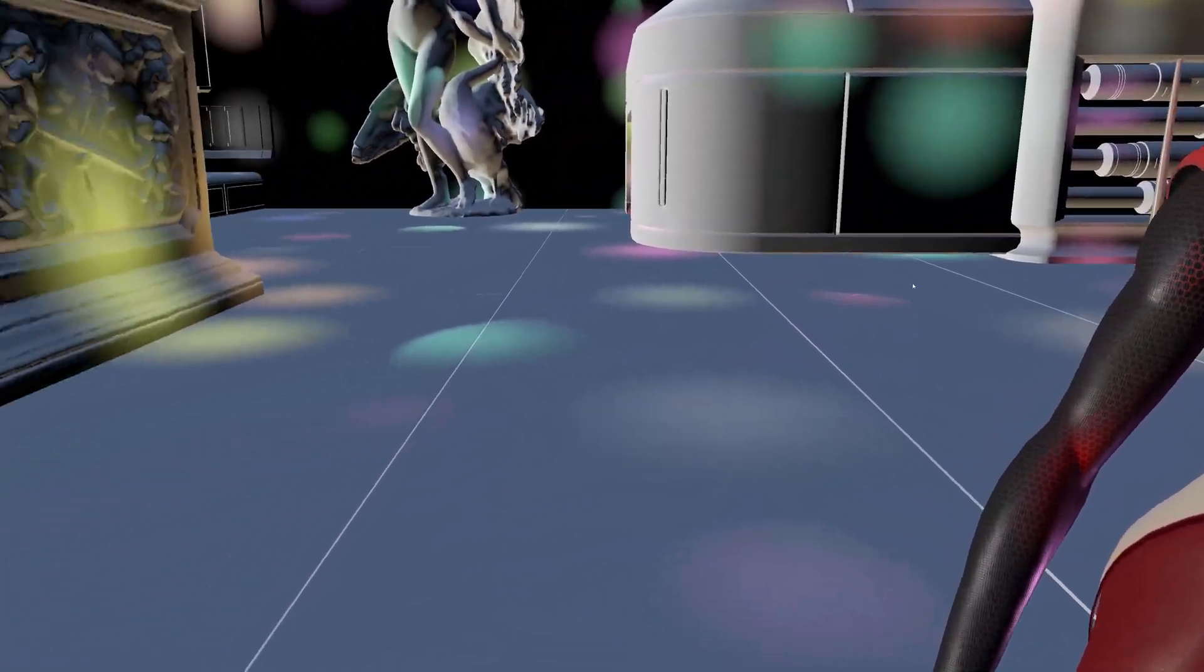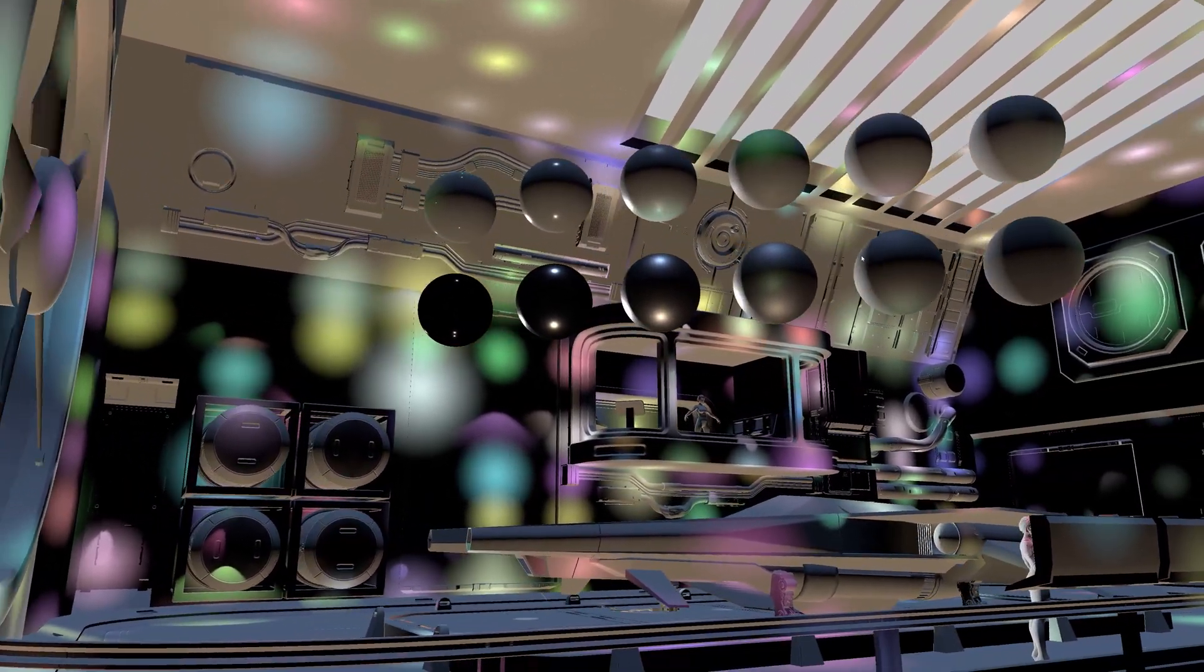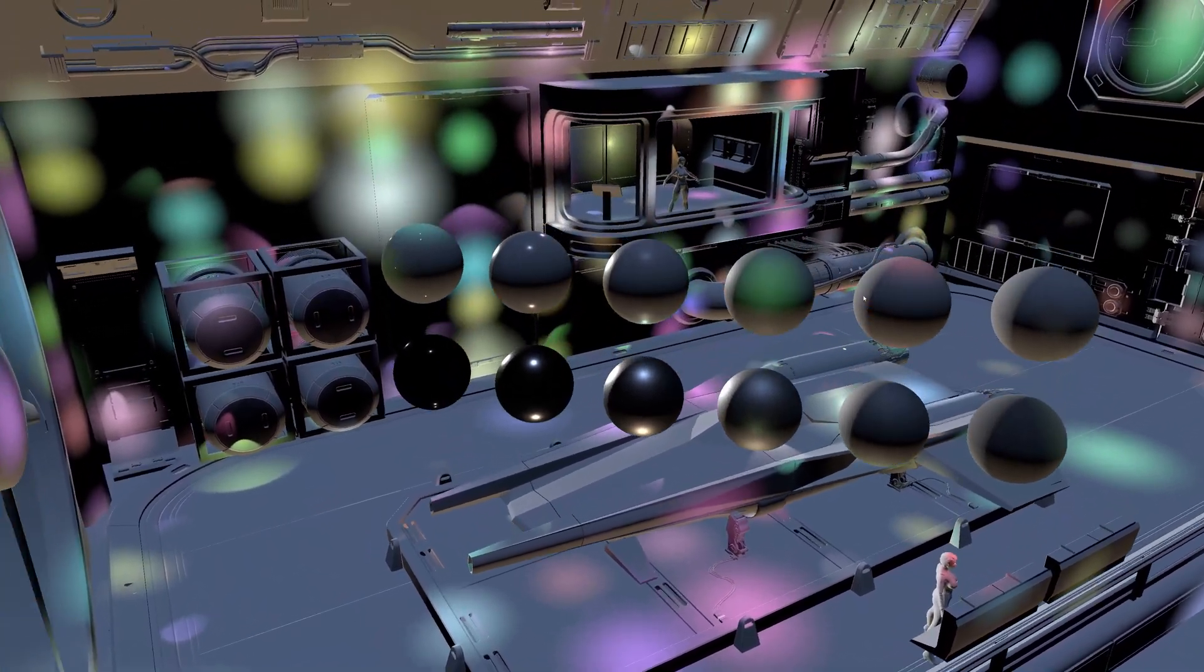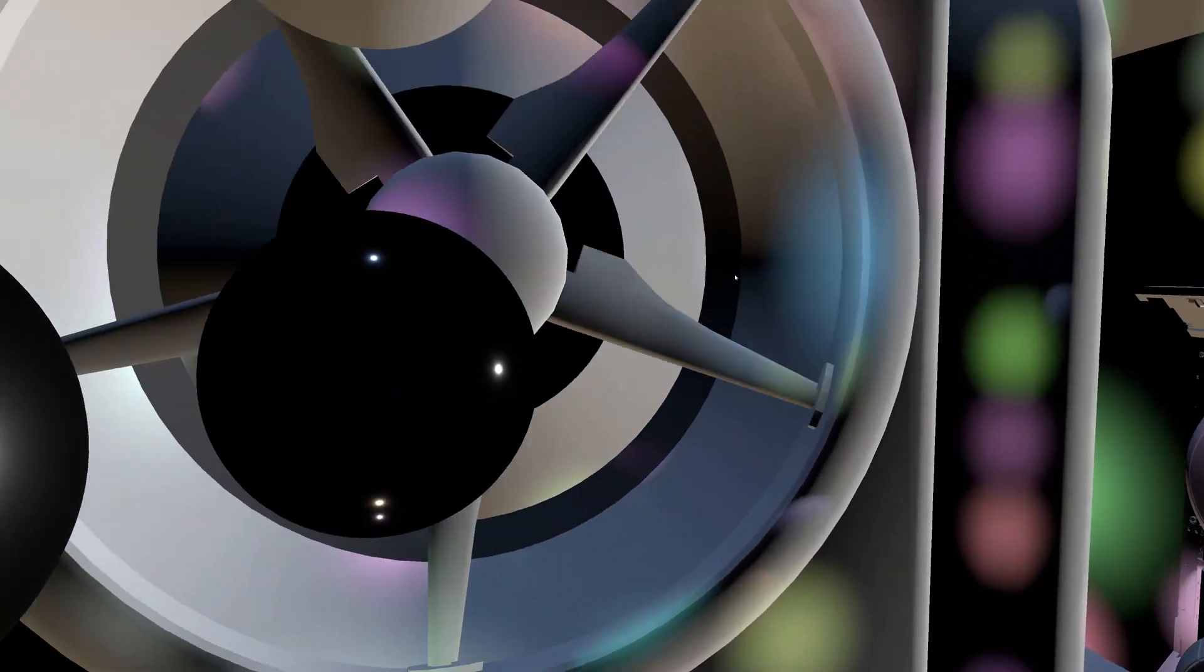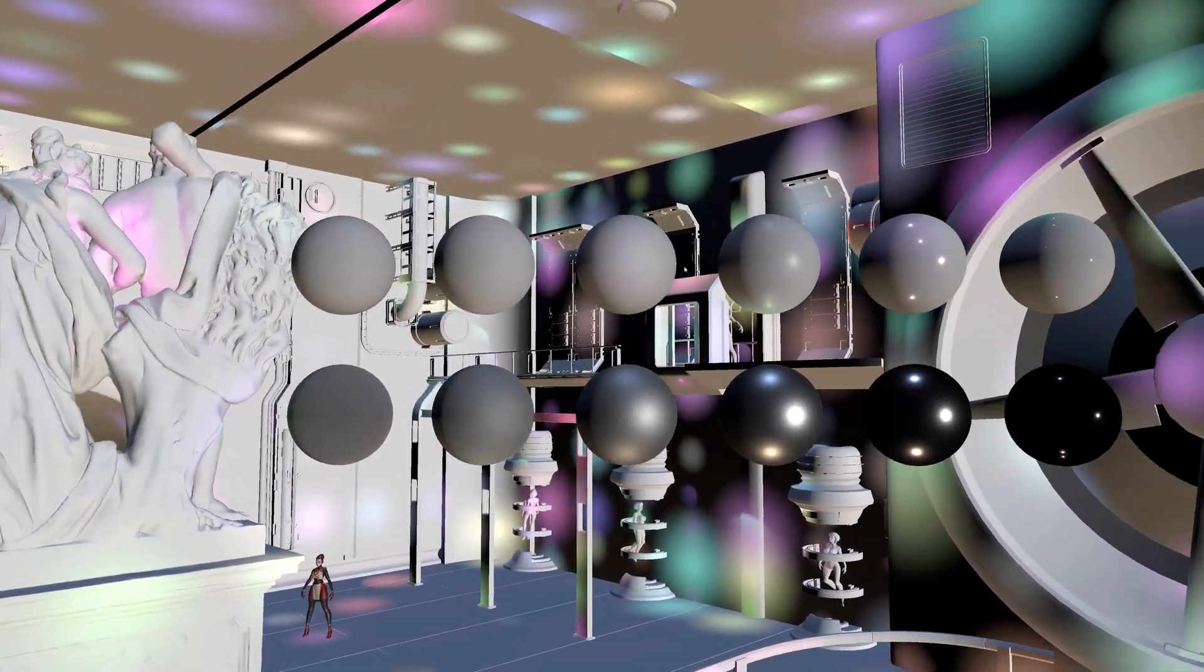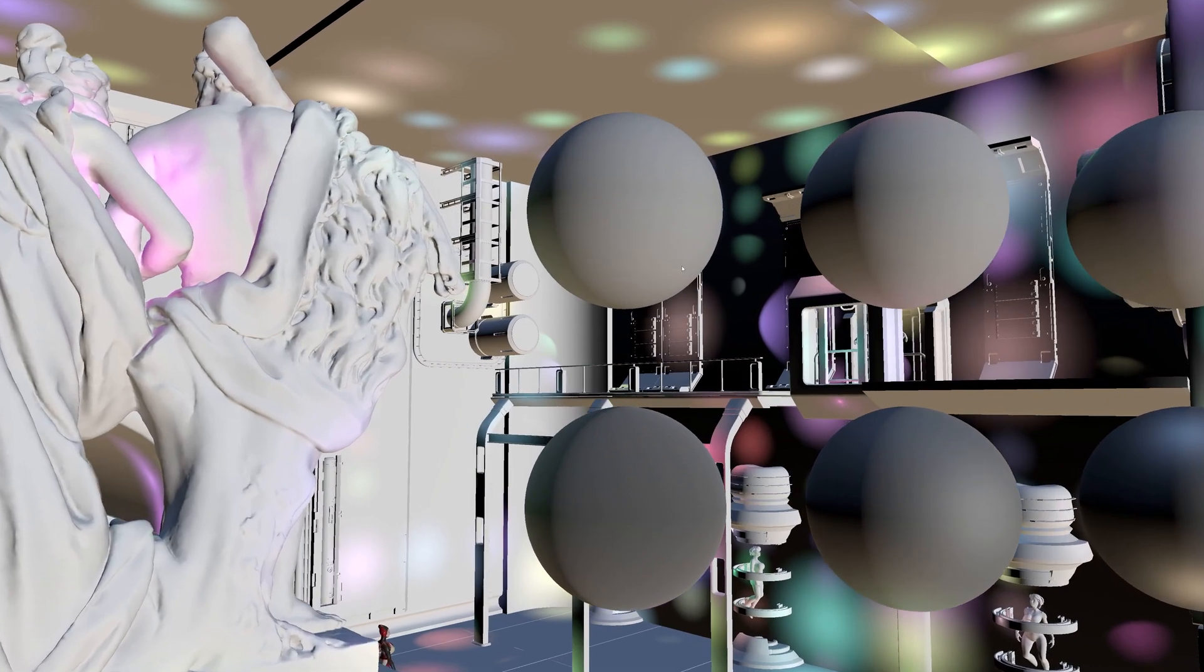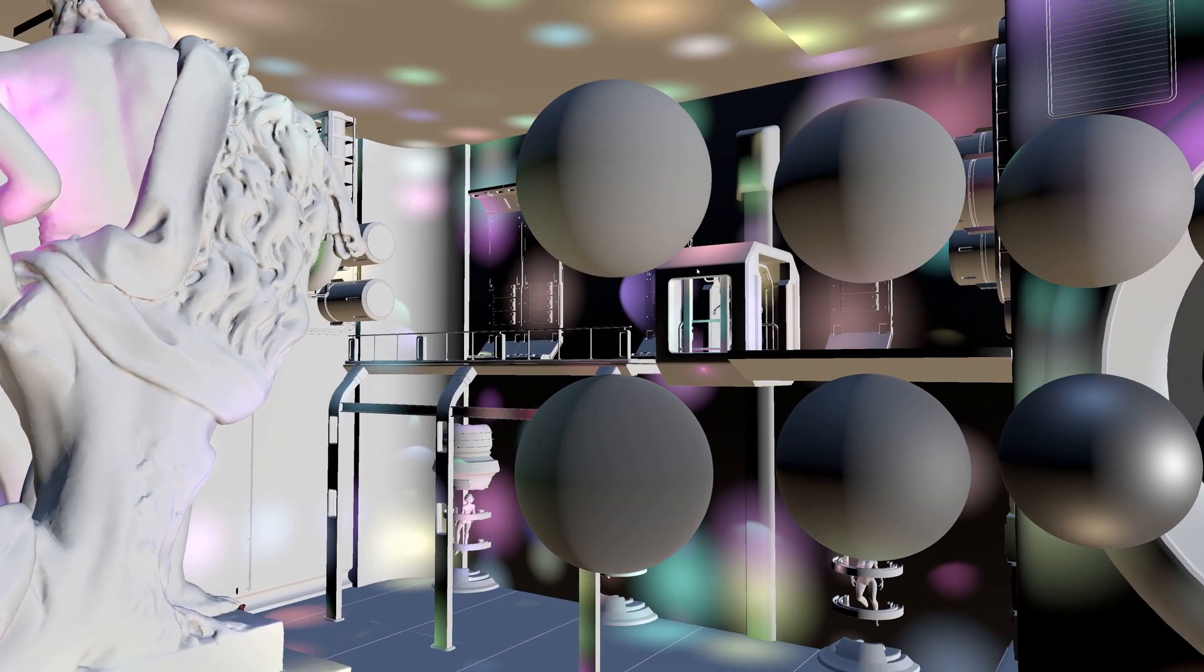I also added a few spheres here so that we can see how lighting behaves for different material roughness and metallic properties. In the bottom row, we have metallic spheres and the top row is non-metallic. And they go from fully smooth to fully rough.